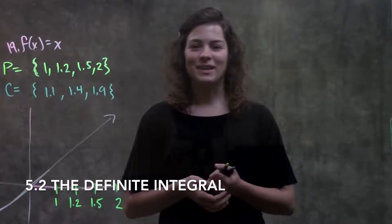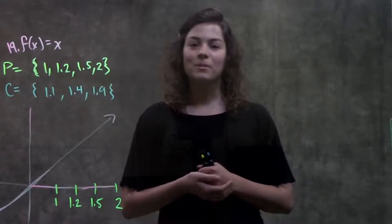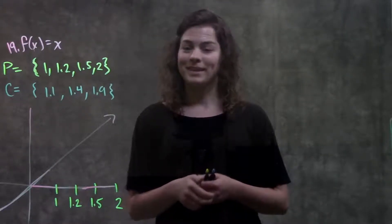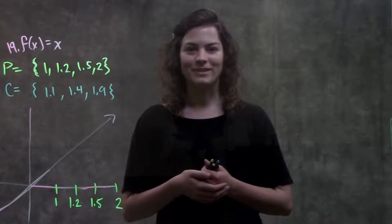This is section 5.2, the definite integral. In this video, we're going to go through number 19 in your book. This is a problem where it's asking for the Riemann sum, and it's giving us partitions and sets of points, and we just got to figure out what the area under this curve is.